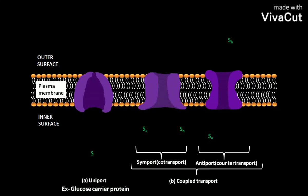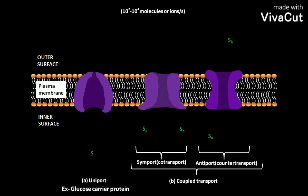The symport and antiport are called coupled transport. It is called as such because the two solutes SA and SB are transported simultaneously, and their transport is coupled such that if SA is absent then transport of SB will be stopped, and if SB is absent then transport of SA will be stopped. Through these three types of transporters, the rate of transport is about 10² to 10⁴ molecules or ions per second.